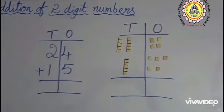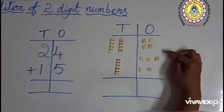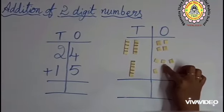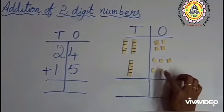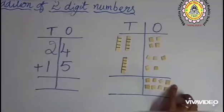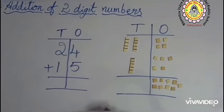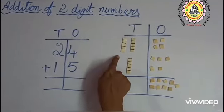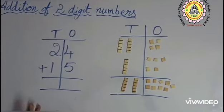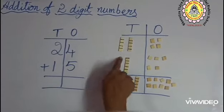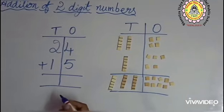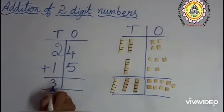Now let us start from 1's place: 1, 2, 3, 4, 5, 6, 7, 8, 9. How many 1's are there children? 9 ones. And how many 10's are there? 1, 2, 3 — 3 tens becomes 30. Now, 24 plus 15 is equal to 39. What is the answer children? 39.